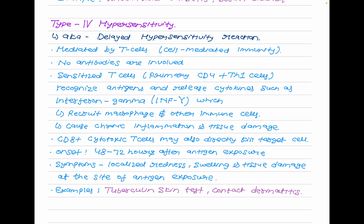The onset time for type 4 hypersensitivity is 48 to 72 hours after antigen exposure. Symptoms are localized redness, swelling, and tissue damage at the site of antigen exposure. Examples include the tuberculin skin test and contact dermatitis.